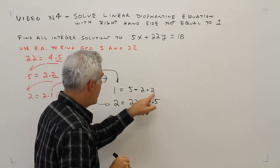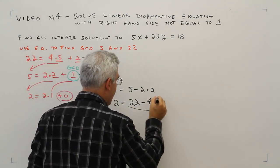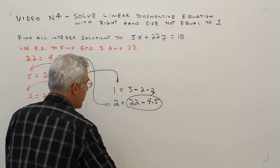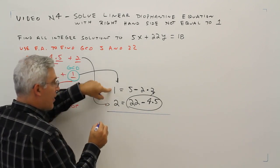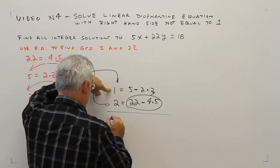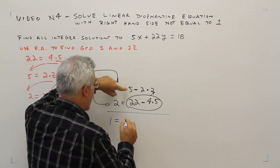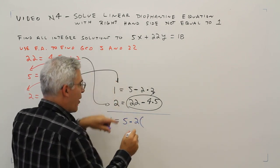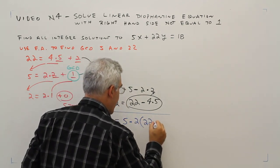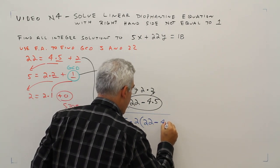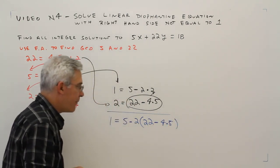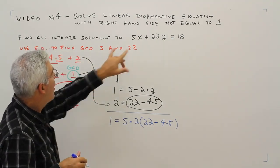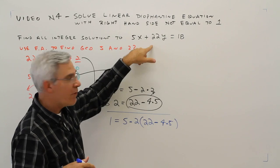Just substitute this. 1 equals 5 minus 2. One thing to keep in mind that I didn't really emphasize before: our original coefficients are 5 and 22. So we really want to be getting 5 and 22 here.